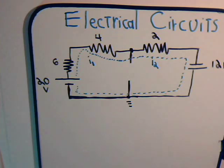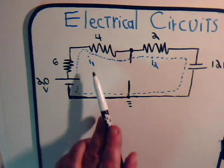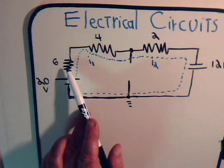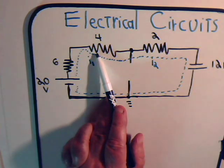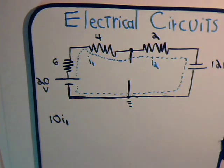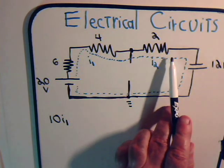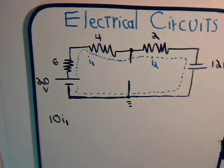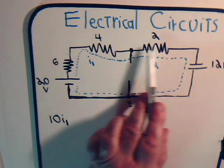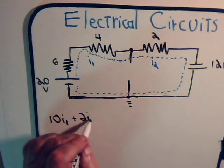In this part of the super mesh, current I1 goes through resistors of 6 ohms and 4 ohms, so we have 10I1. There are no other opposing currents going through these resistors. Continuing along the super mesh current, we have I2 going through that resistor of 2 ohms with no opposing currents, so we have plus 2I2.